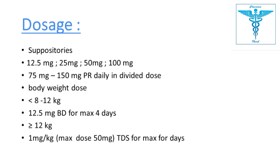Available pediatric doses: 12.5 mg, 25 mg, 50 mg, and 100 mg. A dose of 75 to 150 mg per day can be used in divided doses. If the child's weight is 8 to 12 kg, the dose is 12.5 mg three times daily for a maximum of 4 days. If weight is 12 kg or more, 1 mg per kg three times daily for 4 days, with a maximum of 50 mg per day.